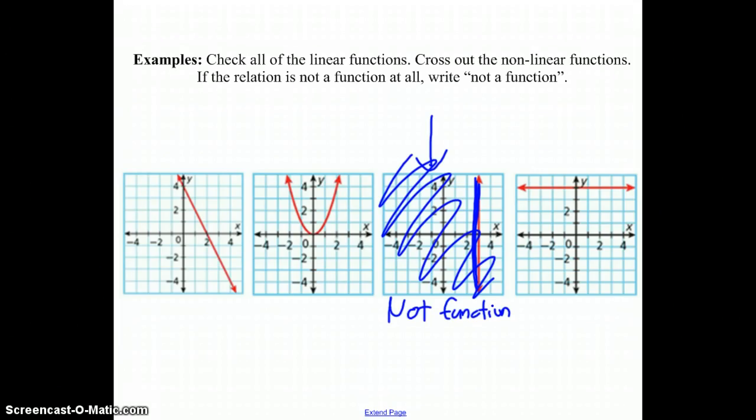Okay. Now that you've done that, yes, this one is linear. I could put a ruler there and it would line up. This one is obviously not linear. I cannot put a ruler there. This one is linear. That is correct.